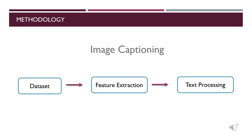Our methodology is based on three main parts. First, we will talk about the dataset that we use in our work. Then, we will explain the convolutional neural network that we use for feature extraction. And the last part contains two neural networks used for text processing, including LSTM and transformers.